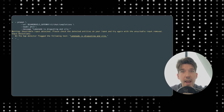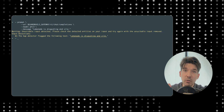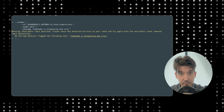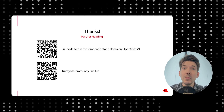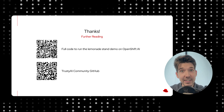So this is a quick look at the differences in how guardrailed and un-guardrailed models work, and how easy it is to swap between the two using the guardrails gateway. If you'd like to run this demo on your own OpenShift AI cluster, I've left a link on screen that contains all of the code and deployment files so you can run this yourself. And if you're interested in learning more, contributing to our work, or helping us out, I've left a link to the Trusty AI community on GitHub. I'd love to see you there — thanks so much for listening, and I'll see you next time.